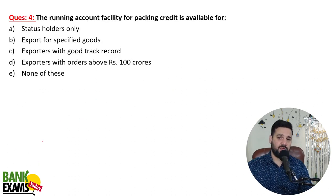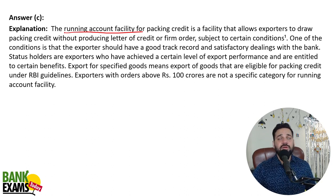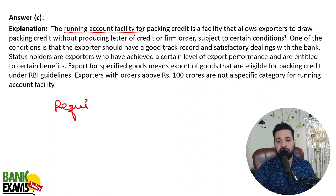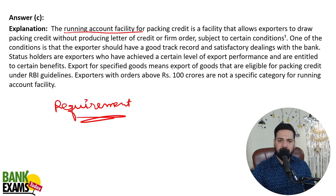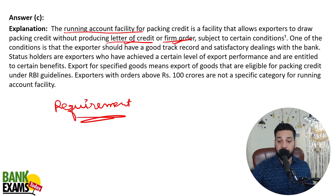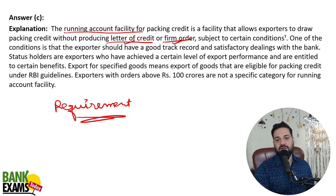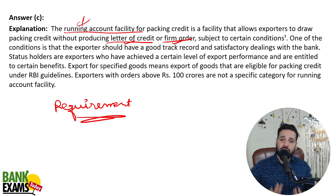Packing credit is available at a lower rate of interest. The running account facility for packing credit is available for exporters with good credit history. Normally, to get pre-shipment credit you need to produce an irrevocable letter of credit or a confirmed export order. But if you are a regular exporter fulfilling orders regularly, you can have a running account — meaning even without producing a letter of credit or confirmed order you can get credit.